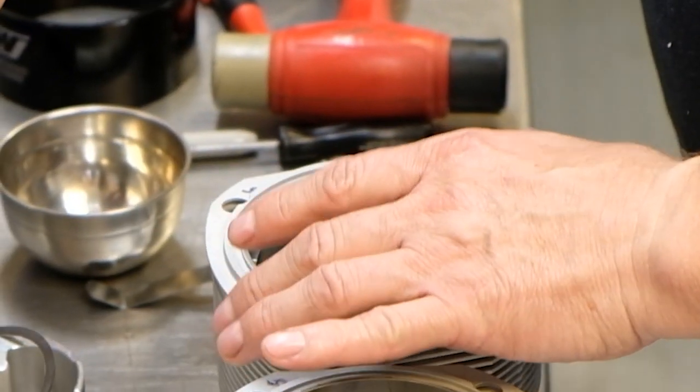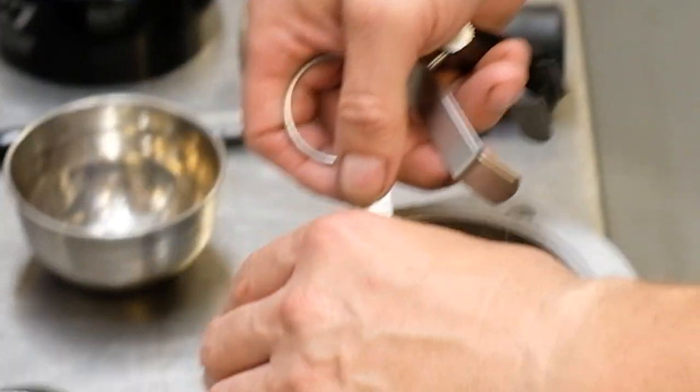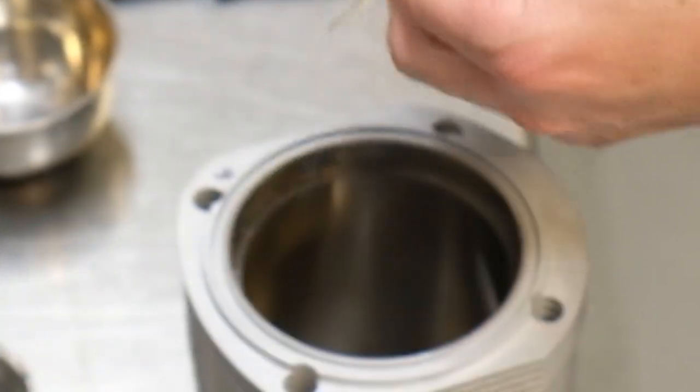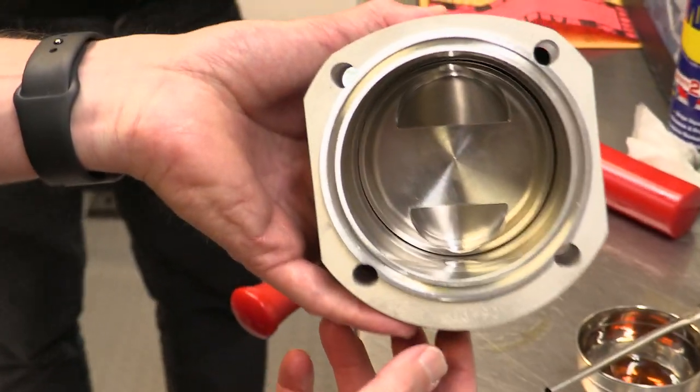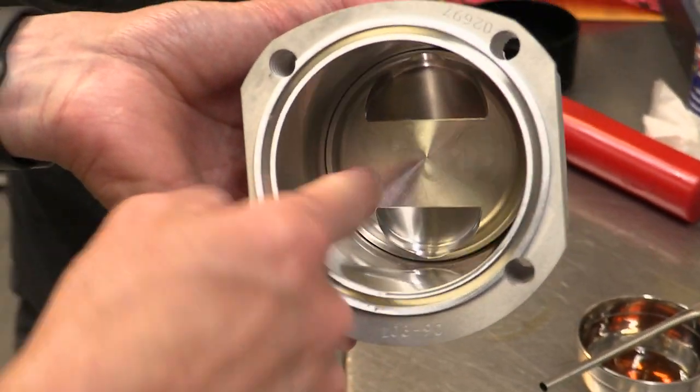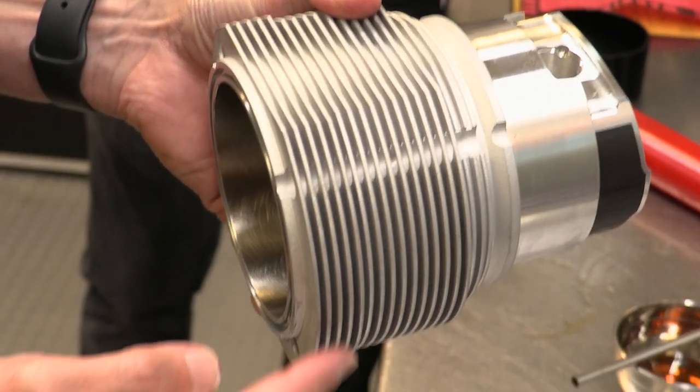Setting the correct ring gap on aftermarket piston rings is crucial for proper performance and engine longevity. When using OEM Porsche Mala piston and cylinder sets where the pistons and rings are preloaded into the cylinders, Mala has pre-gapped piston rings.